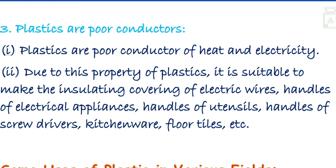Plastic is a poor conductor of electricity and heat. Electrical wires are coated with plastic because current does not flow easily through plastic — it is a poor conductor, or you can say it is an insulator. Insulator means no current passes through it. Due to this property, plastic is suitable to make the insulating covering of electrical wires and the handles of electrical appliances.